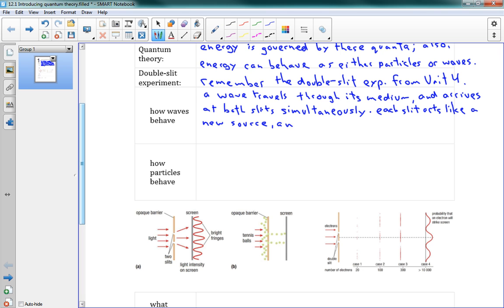It arrives at both slits at the same time simultaneously. Each slit acts like a new source, and the two sources interfere, creating bands of interference on the screen. And I apologize right now for the amount of writing in this lesson, but it's just an intro to the ideas. I want us to be able to talk about what's happening here.